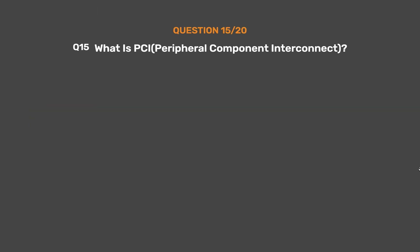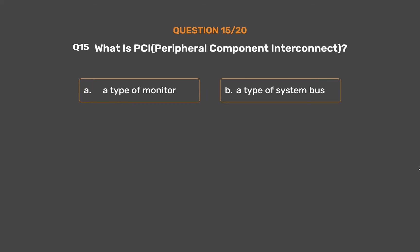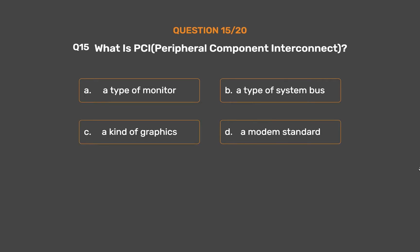Question number 15. What is PCI (Peripheral Component Interconnect)? Option A: A type of monitor. Option B: A type of system bus. Option C: A kind of graphics. Option D: A modem standard.